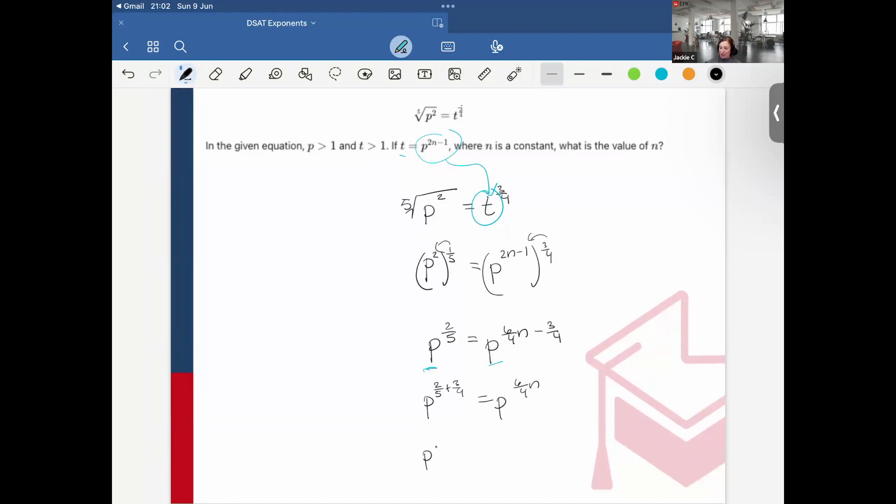Next, I would find the common denominator, which is 20, and then this would become 8 over 20 plus 15 over 20, and that's equal to p 6 fourths n, which simplifies to p 23 over 20. Sorry, that's a little messy.